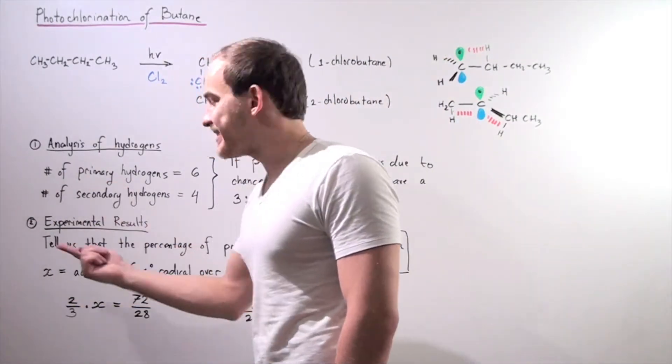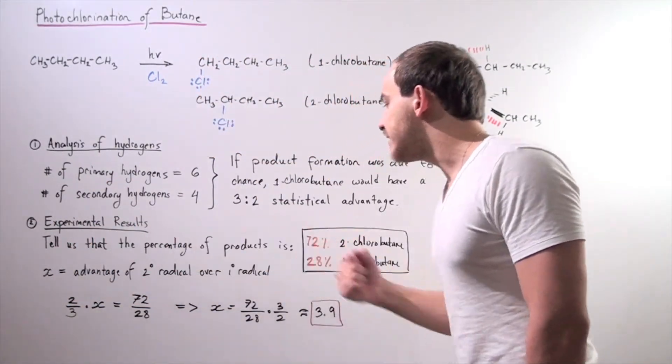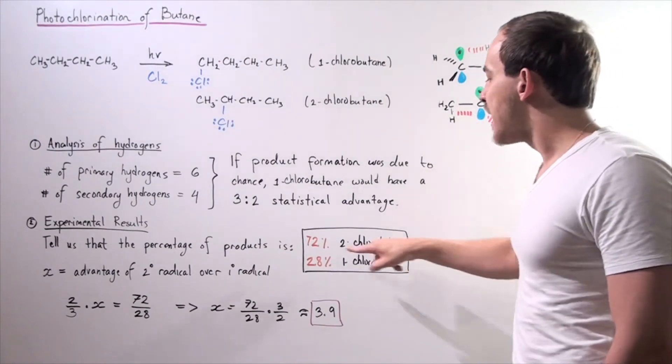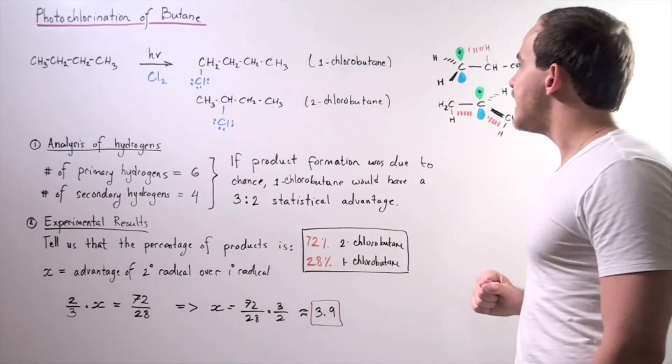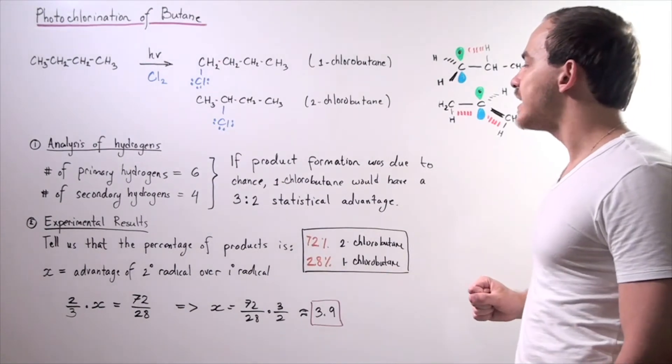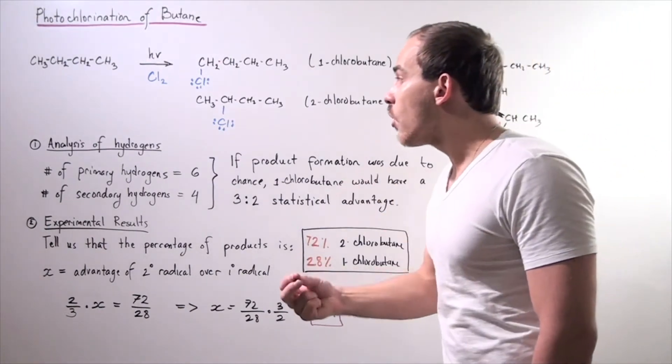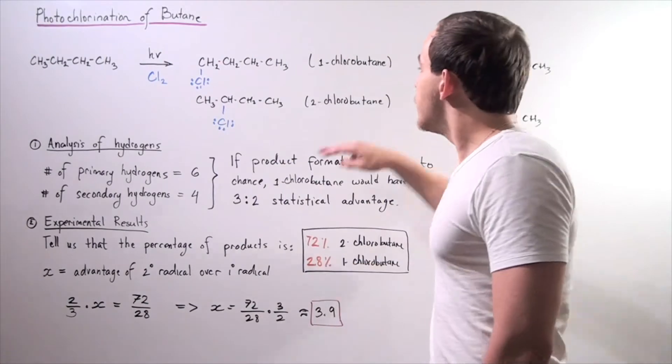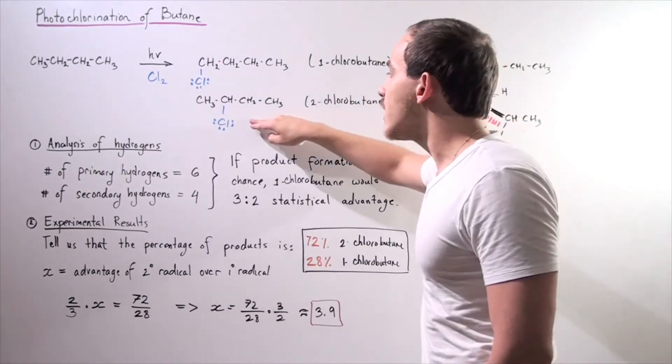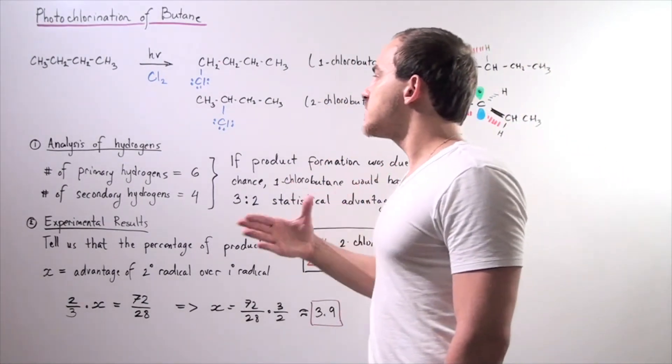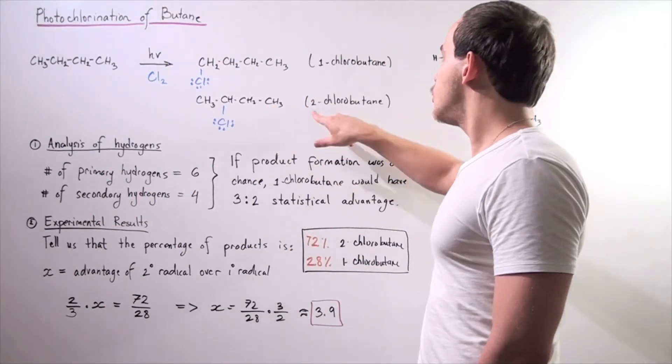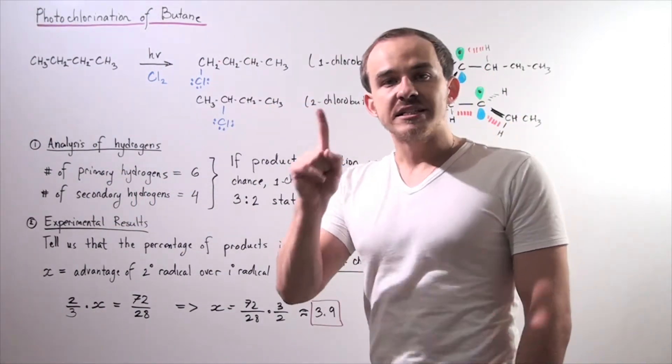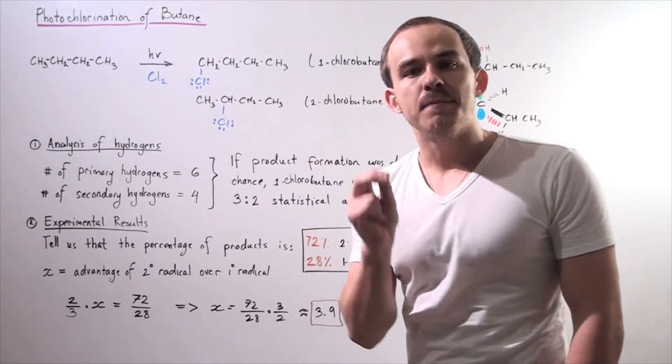Experimental results tell us that the percentage of products at the end is 72% two-chlorobutane and 28% one-chlorobutane. So even though there are more primary H atoms, this is still the major product. That means there must be some other advantage to forming this two-chlorobutane, and this advantage lies in its stability.